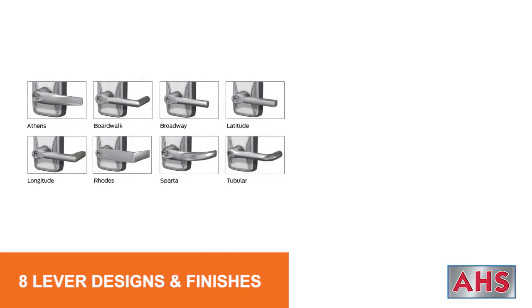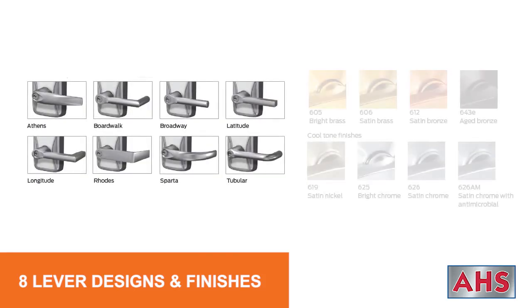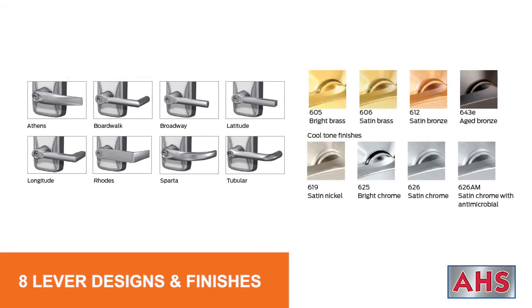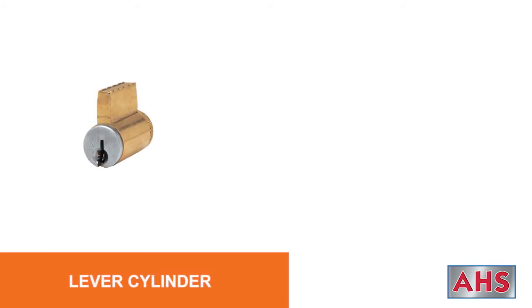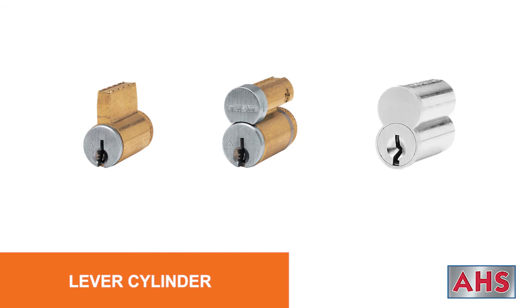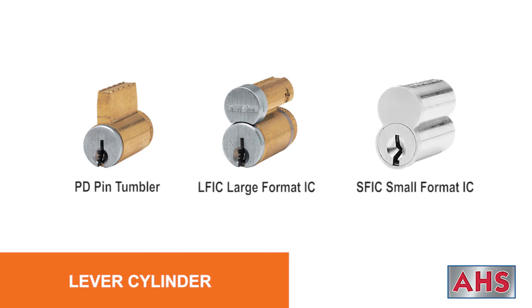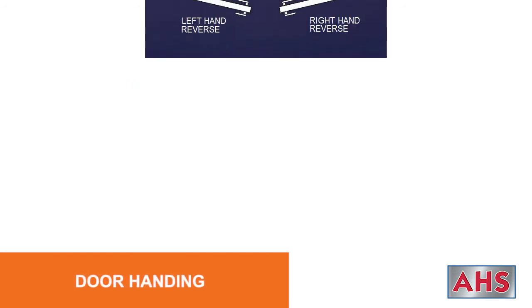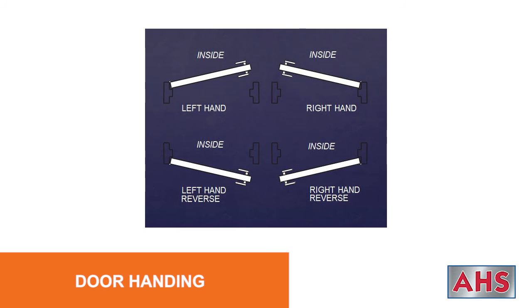There are eight different lever designs and eight finishes to match a variety of building decors, as shown here. AD locks can also be ordered to operate with the end user's key system, like key and lever, small format interchangeable core, and large format interchangeable core. AD locks can also be added to the door; regarding the handing of the door, this handy chart maps it all out for you.